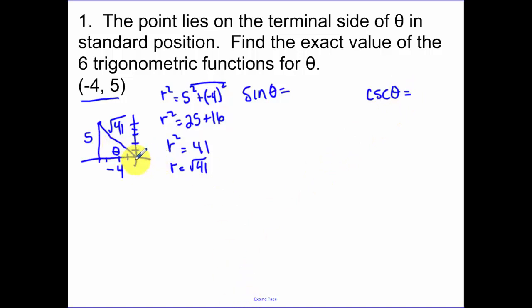So the sine of theta is opposite over hypotenuse, so 5 over root 41. Make sure you rationalize the denominator. So I multiply by root 41 over root 41. So I get 5 root 41 over 41. Now cosecant: take the reciprocal of this original. Because when I take the reciprocal of the original, that's going to get me a rationalized expression.